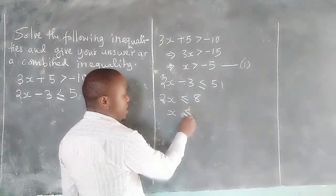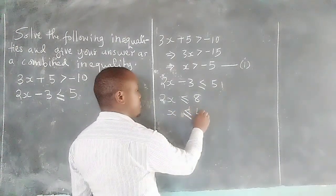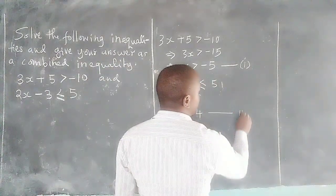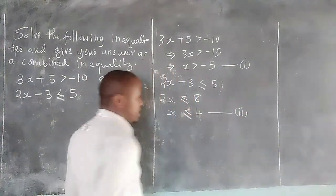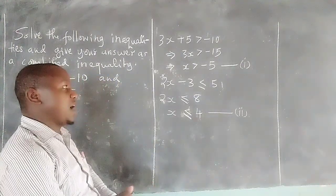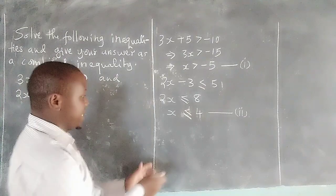And 5 plus 3 will give us 8 such that to remain with x, then we will have to divide all by 2. Such that this is our second symbol statement. So to make a combined statement, then we are going to combine the two symbol statements.